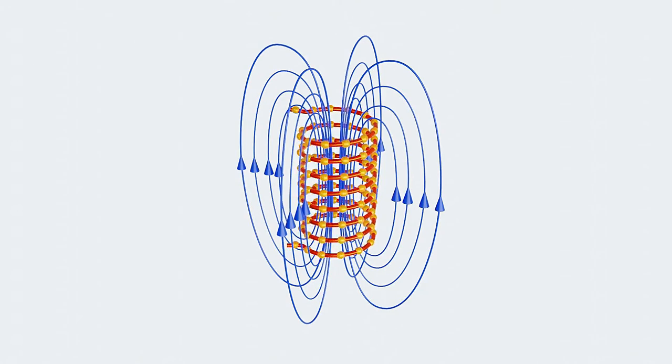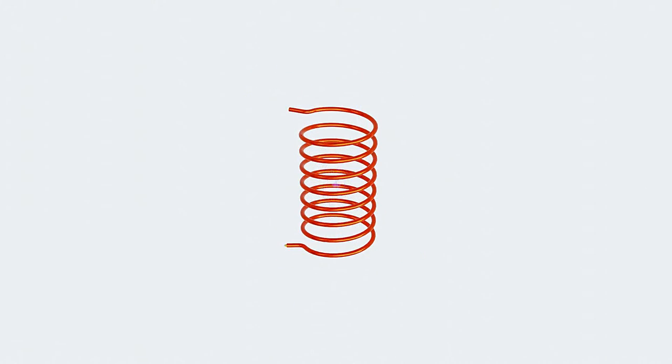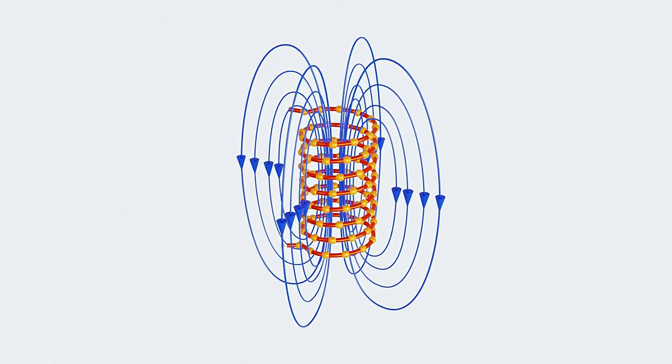The magnetic field is steady because we are passing DC current in the coil. If we pass alternating current in the coil, the magnetic field will also change according to the polarity and magnitude of the current.